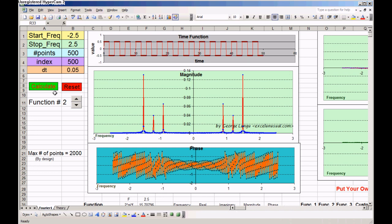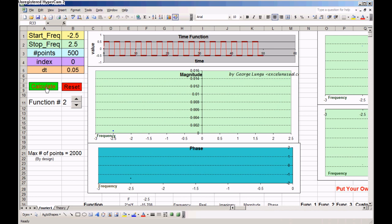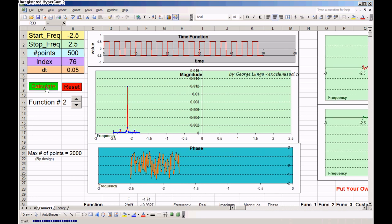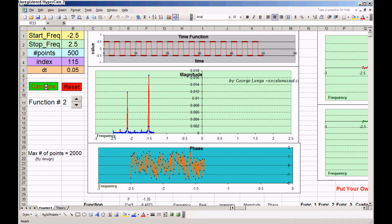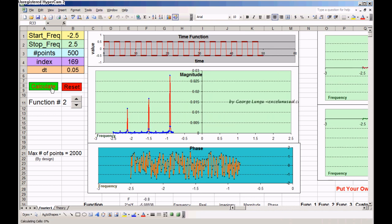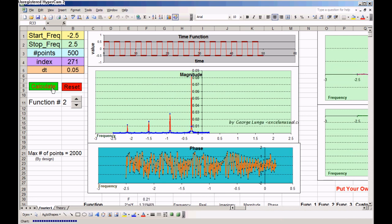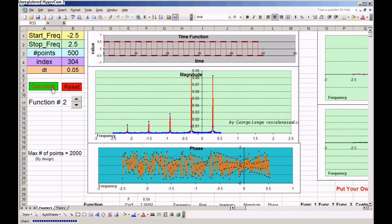Let's run the calculation for function number two. Let's reset it and then calculate. We can see the components here. It's supposed to be symmetric again, the spectrum. And we see that it is.